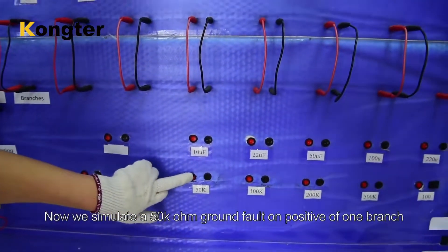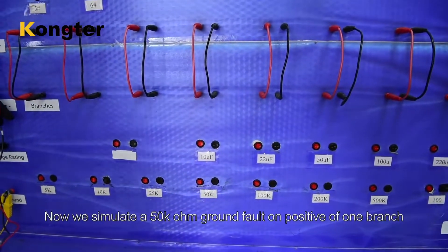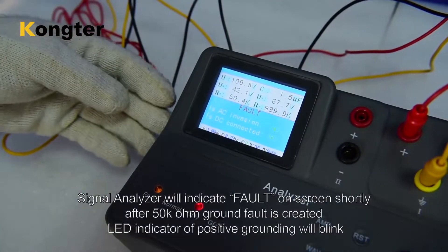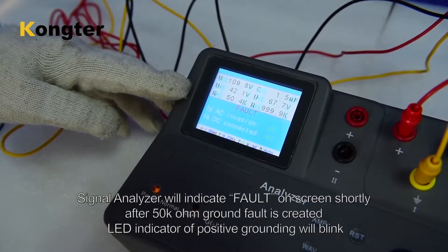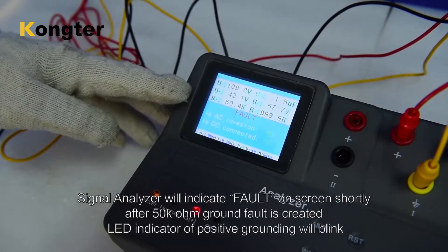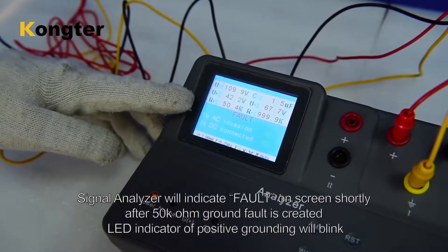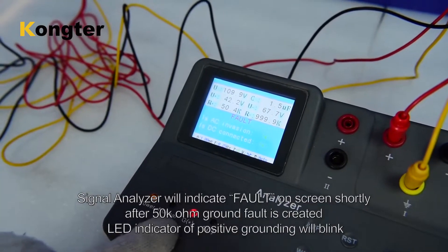Now we simulate a 50k ohm ground fault on positive of one branch. Signal analyzer will indicate fault on screen shortly after the ground fault is created. LED indicator of positive grounding will blink.